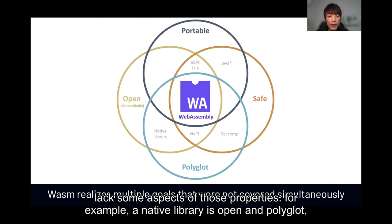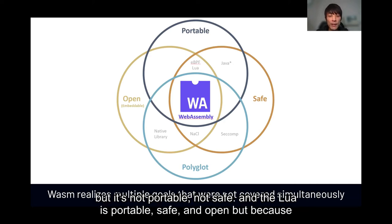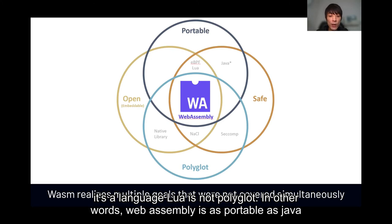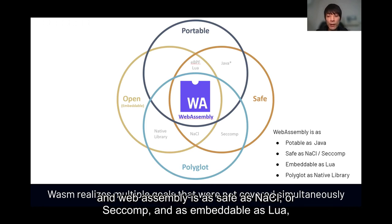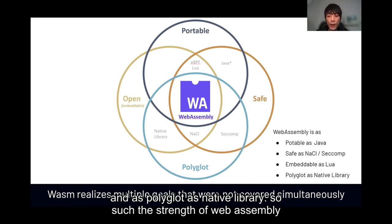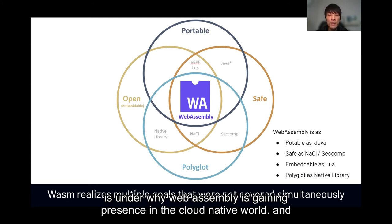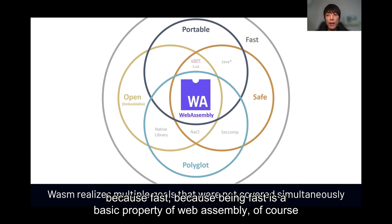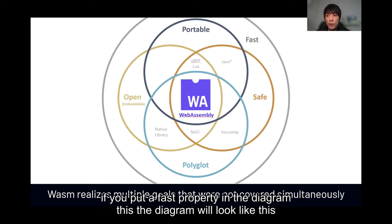This diagram shows the positioning of WebAssembly. As you can see, WebAssembly is open, portable, safe, and polyglot at the same time — realizing multiple goals that were not covered simultaneously before. Other existing solutions lack some aspects: for example, a native library is open and polyglot but not portable and not safe. Lua is portable, safe, and open, but not polyglot. In other words, WebAssembly is as portable as Java, as safe as NaCl or SecComp, as embeddable as Lua, and as polyglot as a native library. That's the strength of WebAssembly and why it's gaining presence in the cloud native world. And because being fast is also a basic property of WebAssembly, if you add that to the diagram, the diagram will look even stronger.